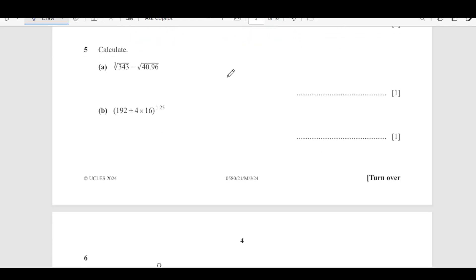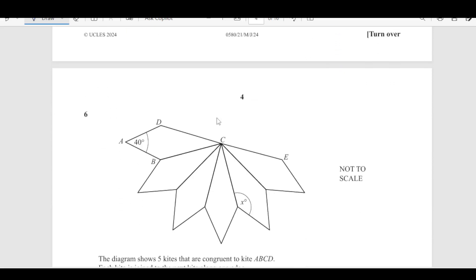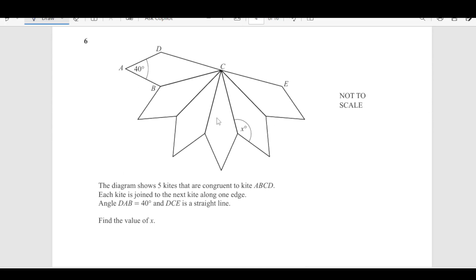Now, calculate cube root of 343 plus 40.90. You just directly plug in the values in the calculator. You are going to get this as 0.6. And also this, just put as it is in the calculator. Remember to put brackets power 1.25 and it is 1024. As it is one mark question, there is no need to show any kind of work here.